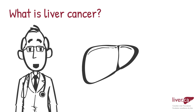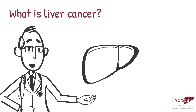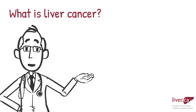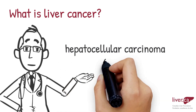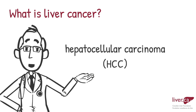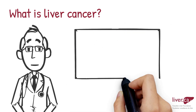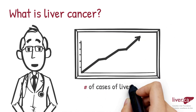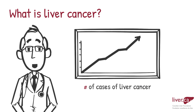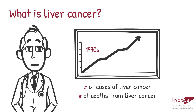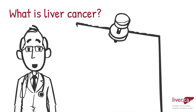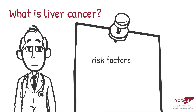The most common form of primary liver cancer, cancer that starts in the cells of the liver, is called hepatocellular carcinoma, or HCC, but most people call it liver cancer. Liver cancer is a leading cause of death. The number of new cases of liver cancer in Canada is increasing. Similarly, death rates from liver cancer have increased significantly since the mid-1990s. This is why it is important to learn more about its risk factors and possible prevention.